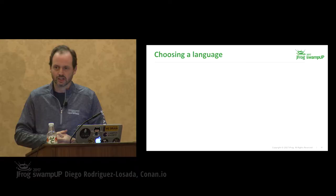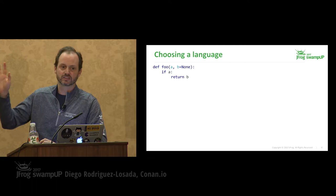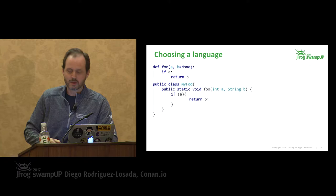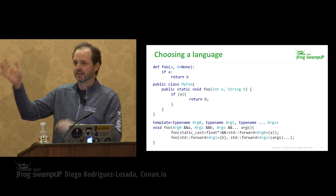First, I'd like to provide a small guide to choosing a proper language for a new project. We could choose Python's ugly and unreadable syntax, or maybe do a bit better with Java and provide some types — still very ugly and unreadable. So I would suggest going for something very readable, compact, and clear, like this elegant C++ syntax. I'm trolling you, of course.